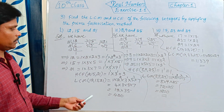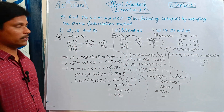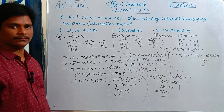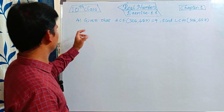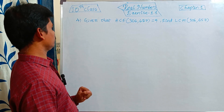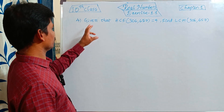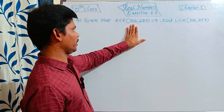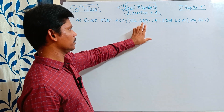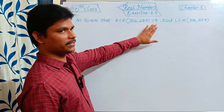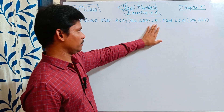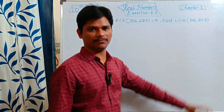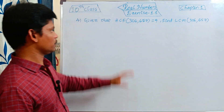This is about the third question. Next question, fourth one: given that HCF of two numbers 306 and 657 is 9. Find the LCM of 306 and 657.